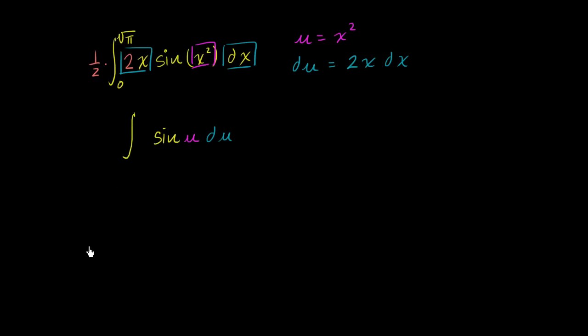And so we have our integral, but these boundaries of integration were written in terms of x. We could have written this as x is equal to 0 to x is equal to square root of π. Now we want to write them in terms of u.